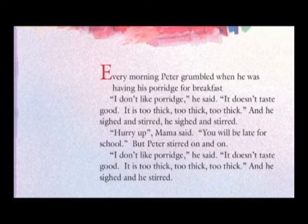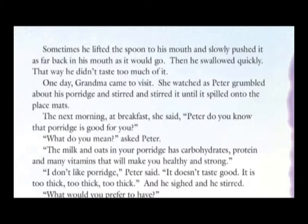Every morning, Peter grumbled when he was having his porridge for breakfast. 'I don't like porridge,' he would say. 'It doesn't taste good. It is too thick, too thick, too thick.' And he would sigh and stir, sigh and stir. 'Hurry up,' Mama would say. 'You will be late for school.' But Peter would stir on and on, sighing and saying, 'I don't like porridge. It doesn't taste good. It is too thick.' Sometimes he lifted the spoon to his mouth and would slowly push it as far back in his mouth as it would go, then he would swallow quickly — that way he didn't taste too much of it.